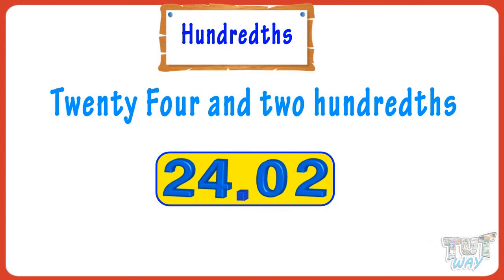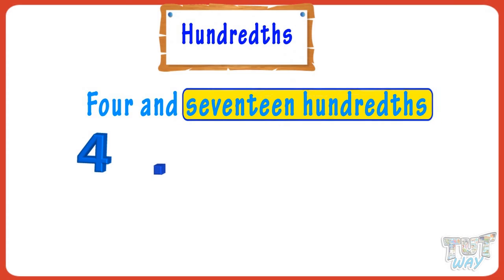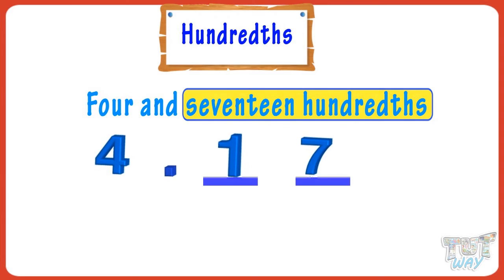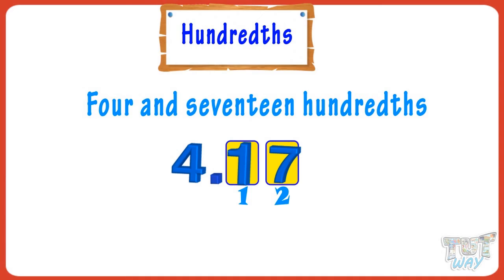Now let's write four and seventeen hundredths. First write four. We know 'and' means decimal point, so put a decimal. Seventeen hundredths means there are two digits after the decimal point, so write four point seventeen. So kids, we learnt that when it's hundredths, there are two digits after the decimal point, and the last digit must not be zero.